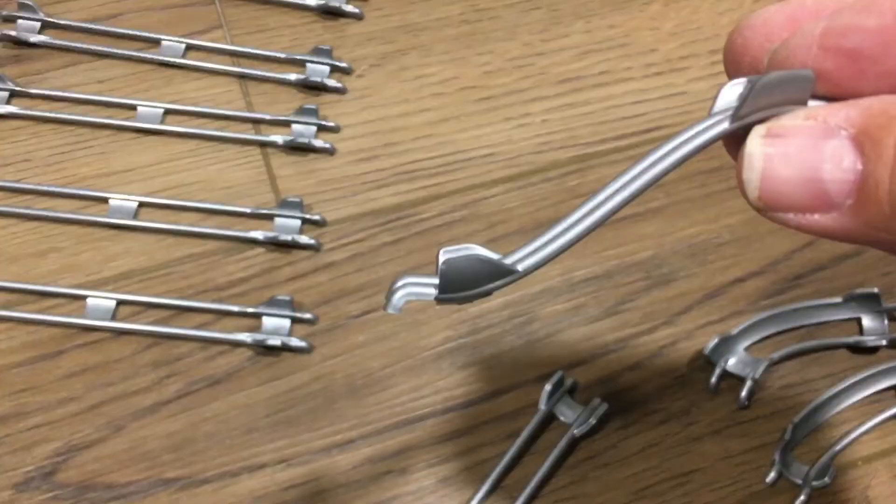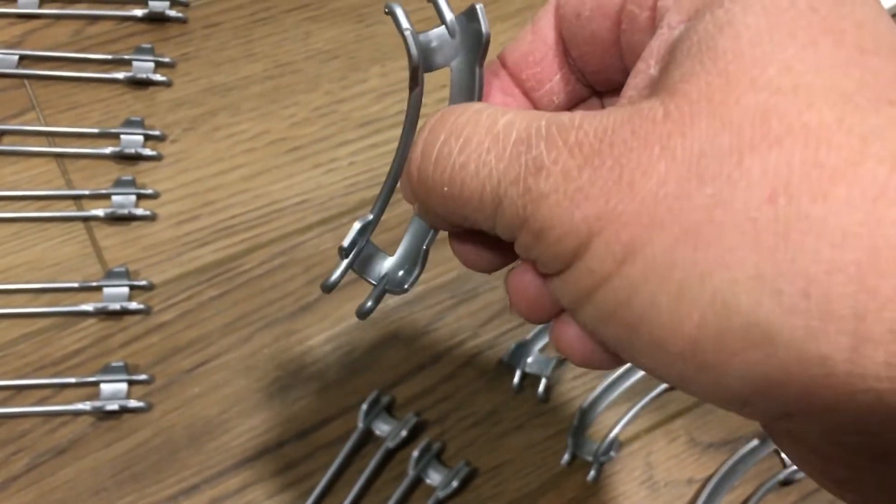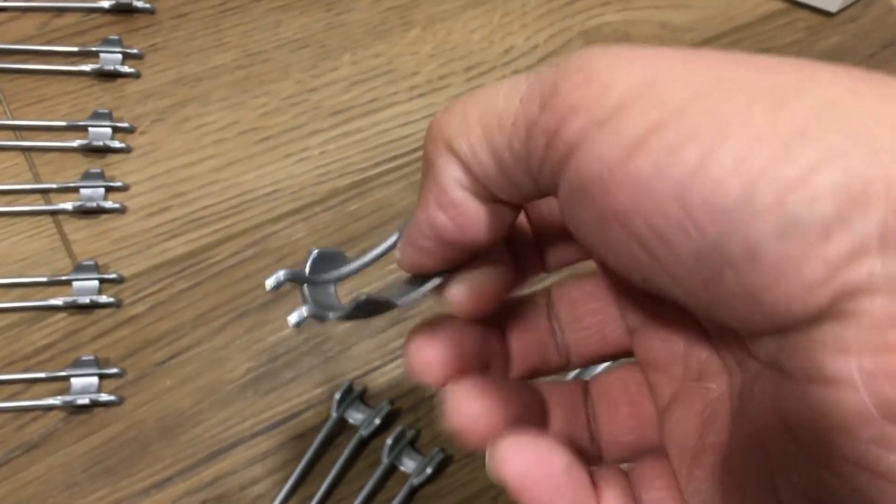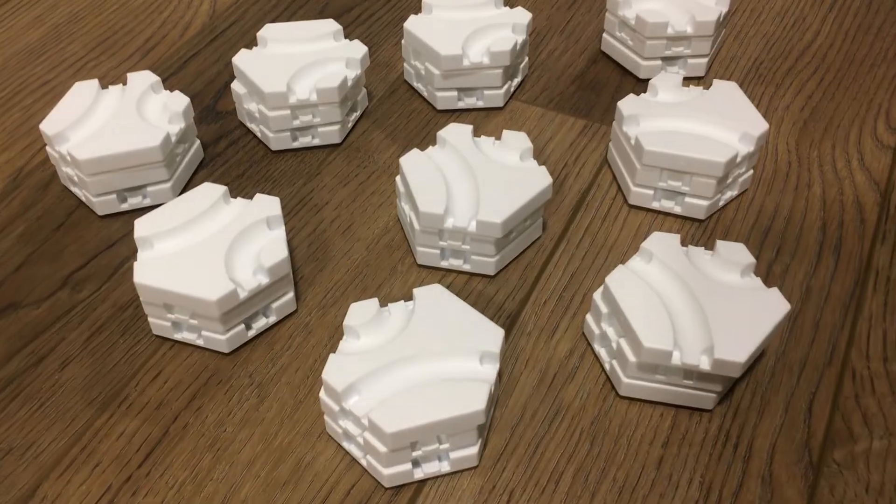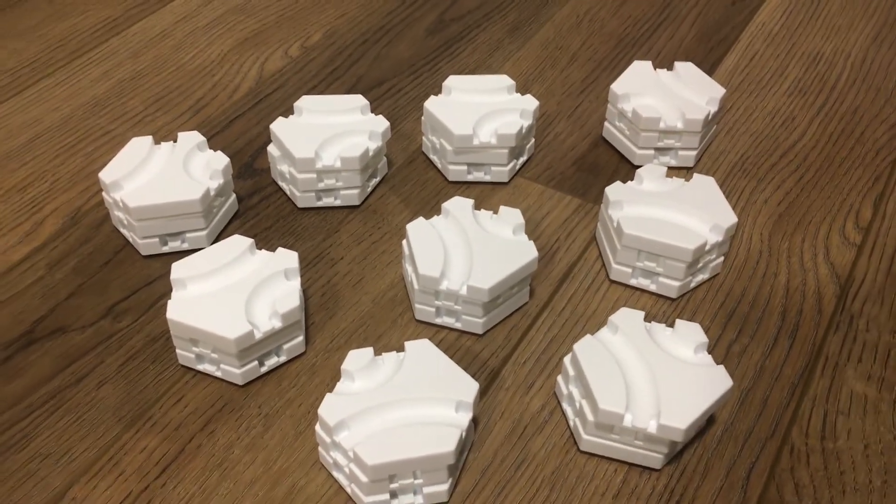The set also comes with two of these and six of these that not only go down a level but also turn the angle of the marble. You get 28 of the curve pieces and this is the most common piece that you will have in your track.